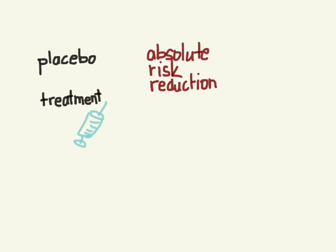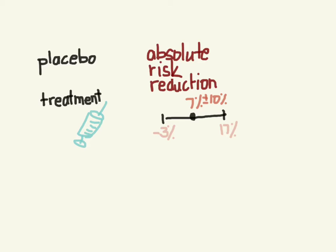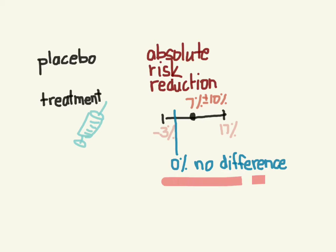Let's look at one of our specific calculations: absolute risk reduction. Maybe the treatment shows a point estimate of 7%. But when we calculate the 95% confidence intervals — say plus or minus 10% — the interval spans zero, and zero is the point of no difference. So even though the point estimate showed a 7% difference, our precision shows there was really no difference.